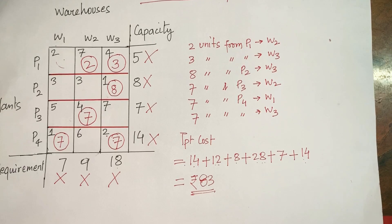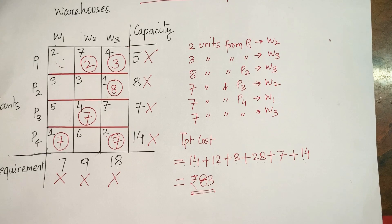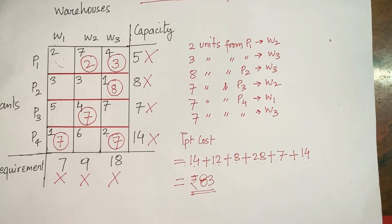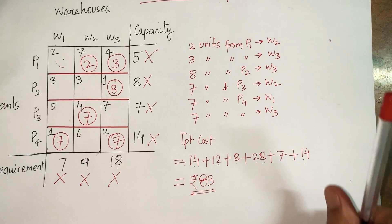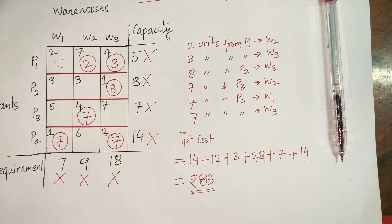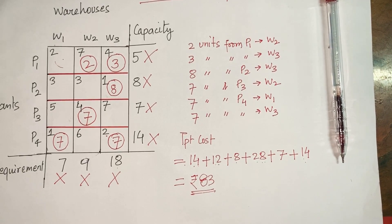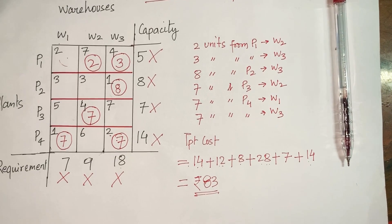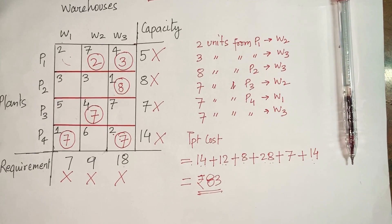Comparing with the Northwest Corner Rule, which gave a cost of 102 rupees, the Lowest Cost Penalty Method reduces it to 83 rupees. The Lowest Cost Method is therefore a better method than the Northwest Corner Rule. The next video will discuss Vogel's Approximation Method applied to the same problem.